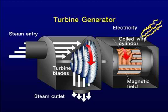A synchronous generator, also known as an alternator, is a device that converts mechanical energy into electrical energy. It operates in synchronization with the frequency of the grid to which it is connected. Synchronous generators are commonly used in power plants, industrial applications, and as backup generators.